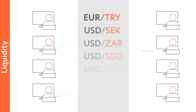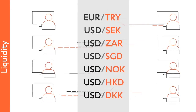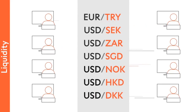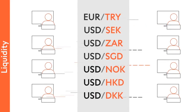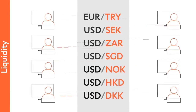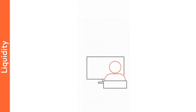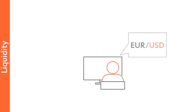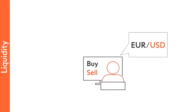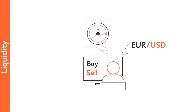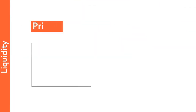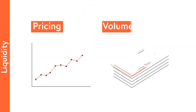Other currency pairs are traded less and typically have less liquidity. Several factors affect liquidity, but fundamentally it's about traders being able to buy or sell what they want, when they want to and at what price. This comes down to pricing and volume.